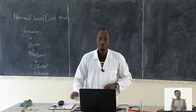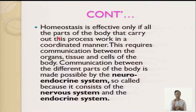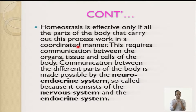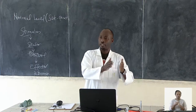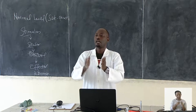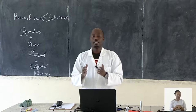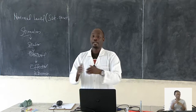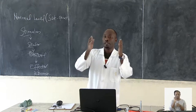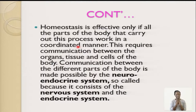Homeostasis is effective only if the parts of the body that carry out these processes work in a coordinated manner. The body has to do all that is required to maintain the internal environment so that body metabolism is not affected. This requires communication between the organs, tissues, and cells of the body, maintaining the internal environment constantly, regardless of external factors.